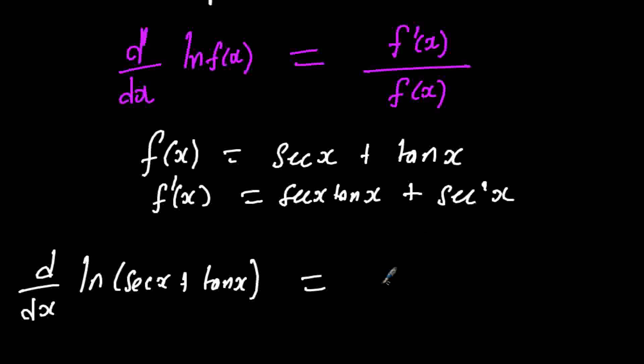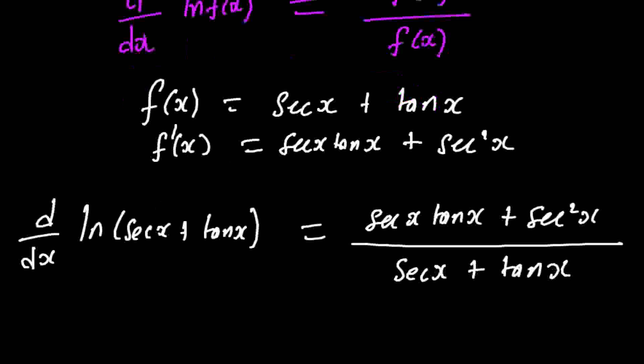...and we've gotten it as sec x tan x plus sec squared x over sec x plus tan x. But you can see that the numerator, sorry, the numerator can be factorized.